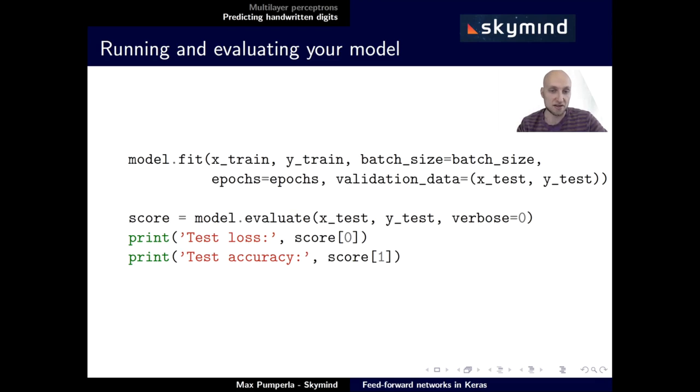The last step we do in this model is we create a score by evaluating the model. In this case, we get back a pair, namely the test loss and the accuracy, which we print to the command line as well. If you do so, you should achieve about 98% accuracy with this model.